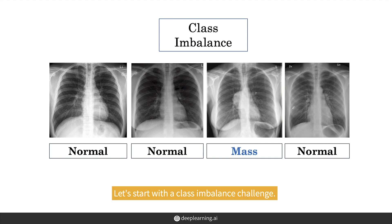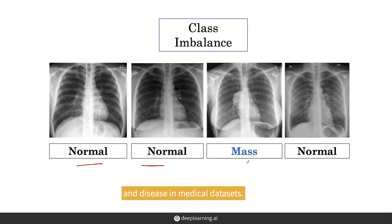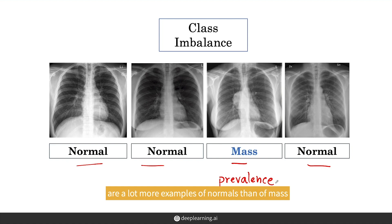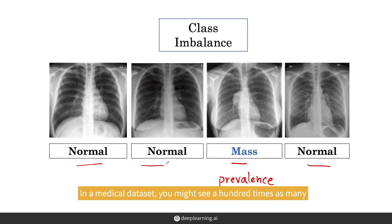Let's start with the class imbalance challenge. There's not an equal number of examples of non-disease and disease in medical datasets. This is a reflection of the prevalence or the frequency of disease in the real world, where we see that there are a lot more examples of normals than of mass, especially if we're looking at x-rays of a healthy population.